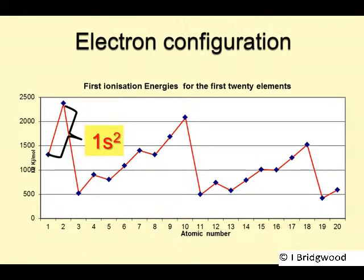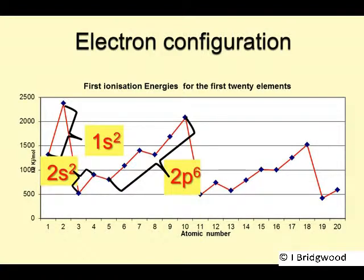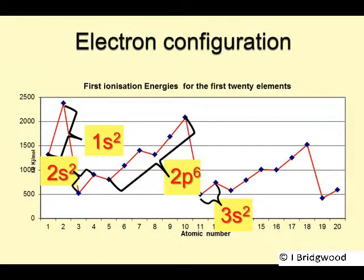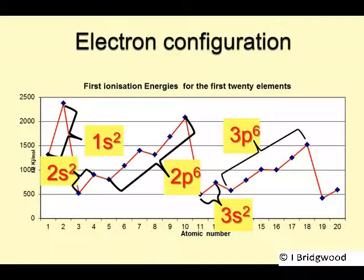Moving into the second period: lithium to beryllium is 2S2. Then boron, carbon, nitrogen, oxygen, fluorine, neon fills 2P6. Then we start again — sodium and magnesium is 3S2, and all the way to argon is 3P6. We can carry on building up our electron configuration in terms of energy levels, shells, and subshells. And that concludes electron configuration.